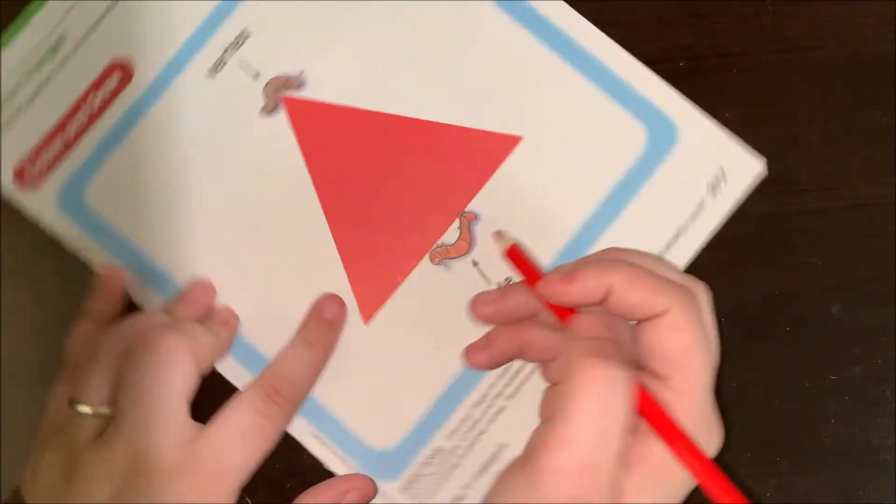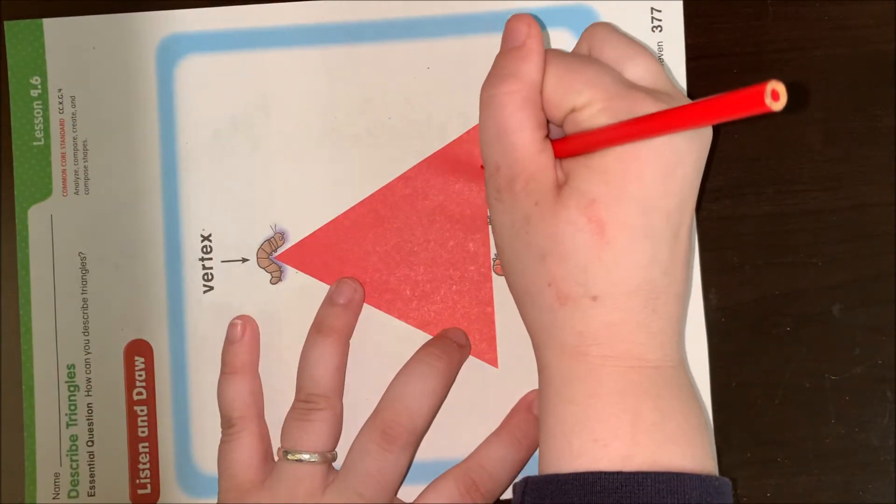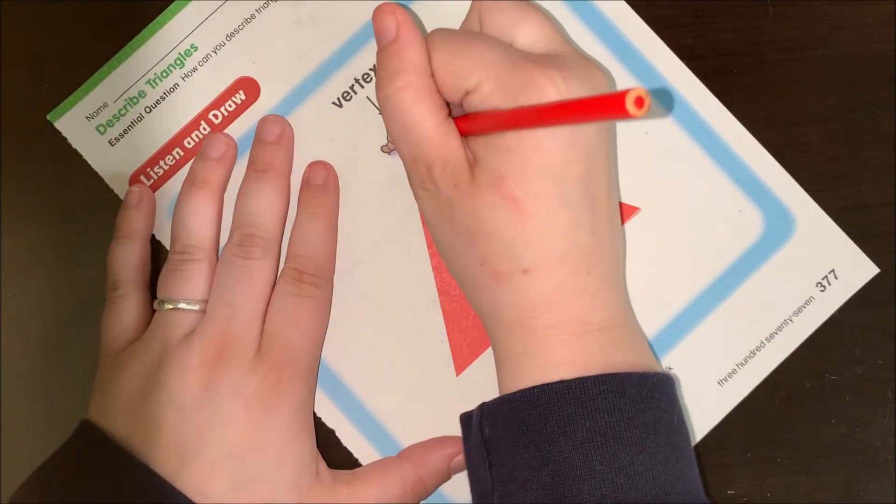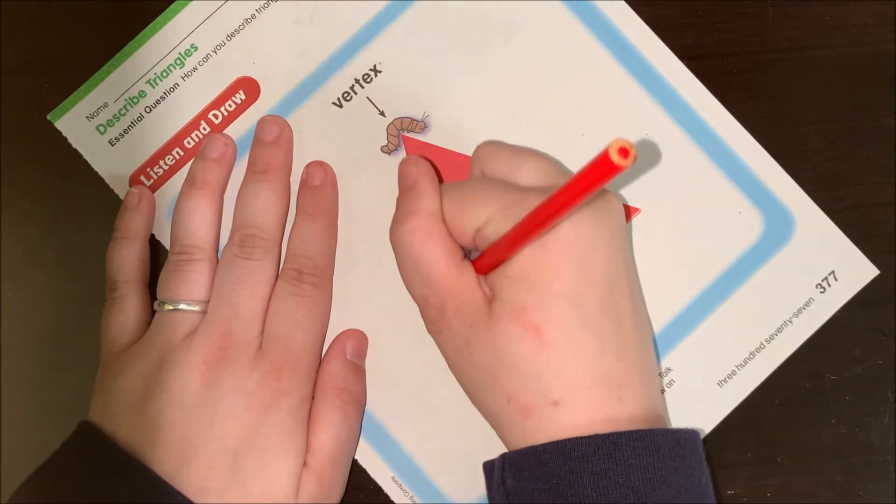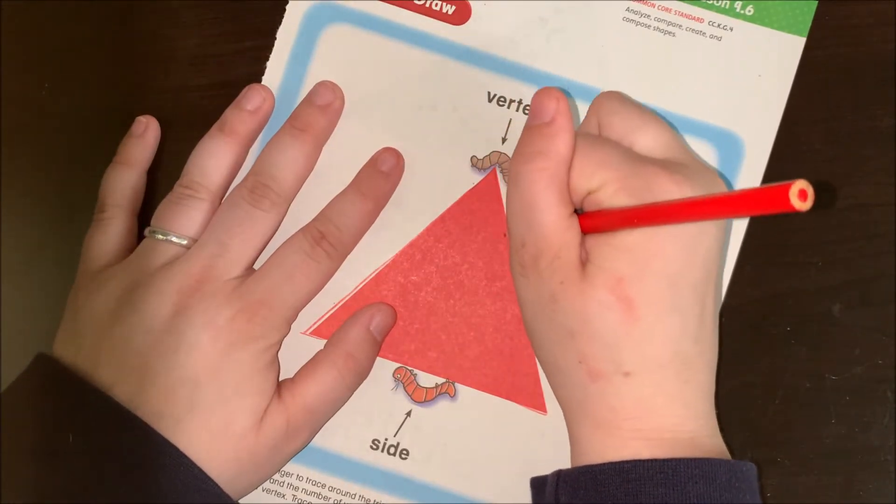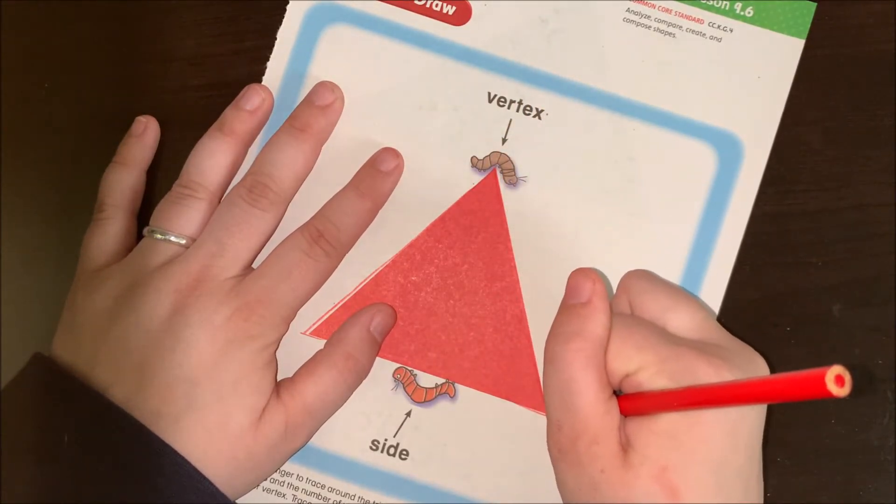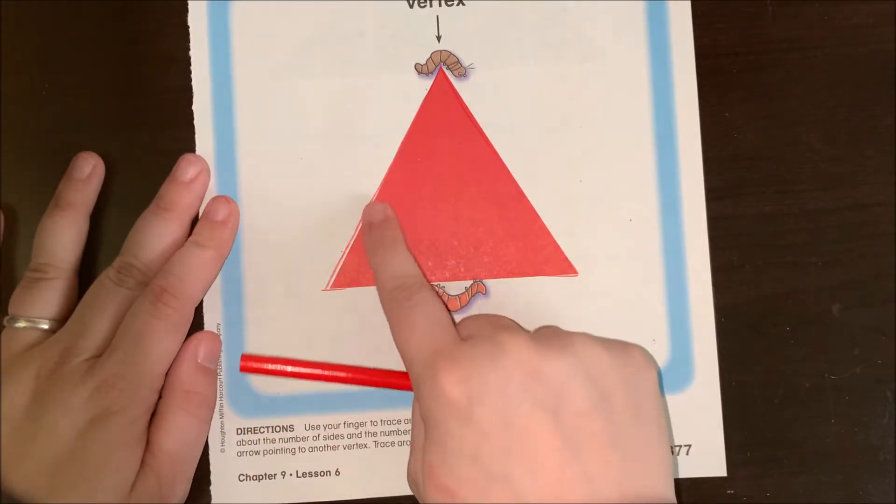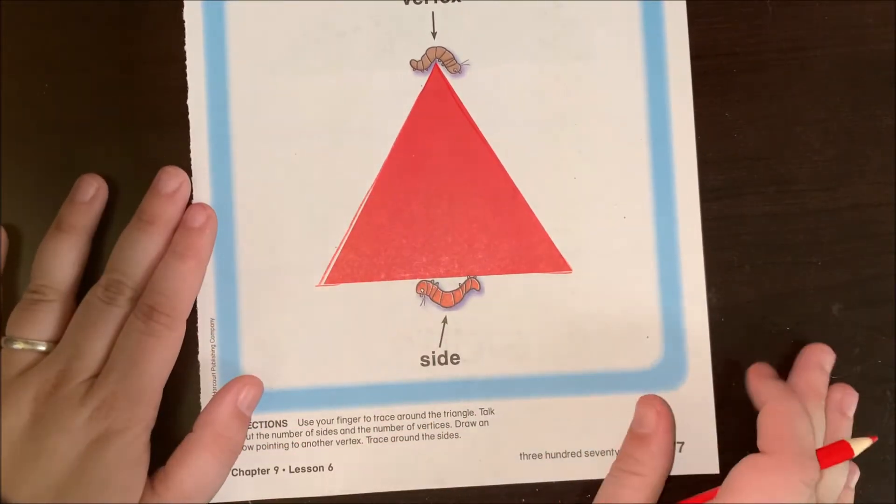Alright, now you're going to take your pencil and trace around the outside. Mine is going to be really hard to see because I write with this color colored pencil and this triangle is red. Do your best to trace along the outside. It's okay if it's not perfect. You can see mine's definitely not. And that's okay.